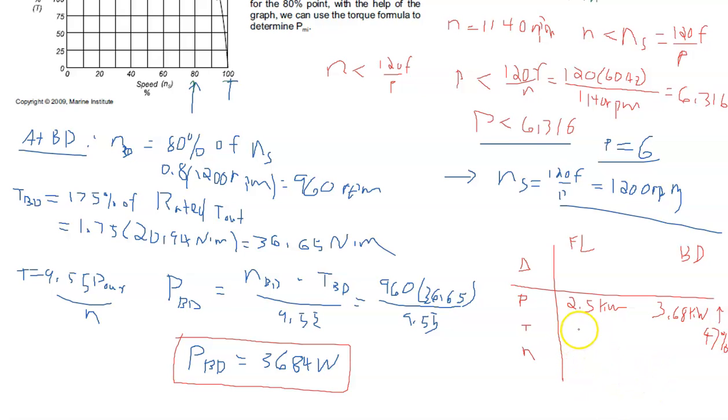For the torque, we know that we went from 100% to 175%, and so that was an increase of 75%. For the speed, we went from 1140 down to 960, and that was a decrease, if we compare it to Ns, of 15%.